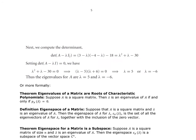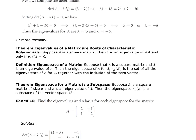Formally: suppose A is a square matrix; then lambda is an eigenvalue of A if and only if the characteristic polynomial P_A(lambda) equals 0. We find eigenvalues by setting det(A − λI_n) = 0, where A must be a square matrix and I_n matches its size.